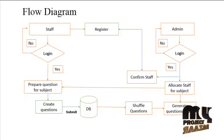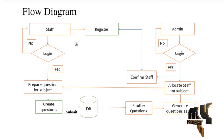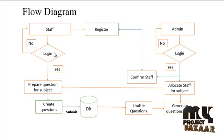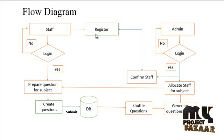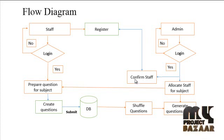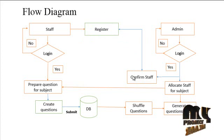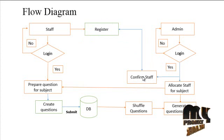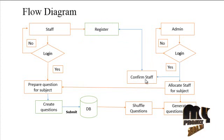Now we can see the flow diagram of our project. The staff and the admin are the two main modules. The staff will register into the system, and after registration the staff has to wait for confirmation by the admin. The admin will login and confirm the staff — if valid, they will confirm; if invalid, they will delete.